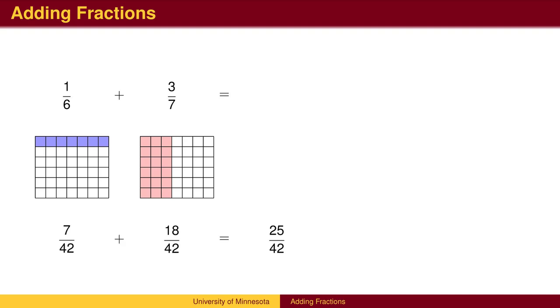One row is 7 of the 42 boxes, and 3 columns are 18 of the 42 boxes, making a total of 25 boxes.